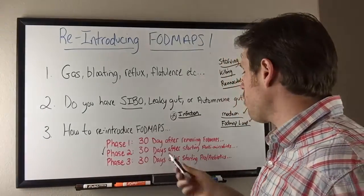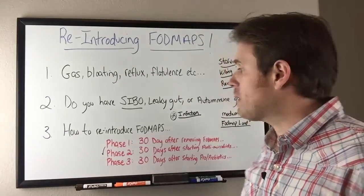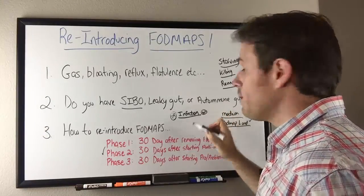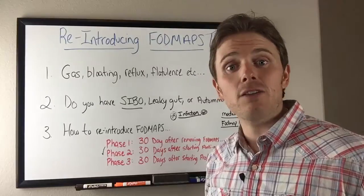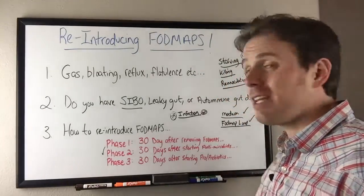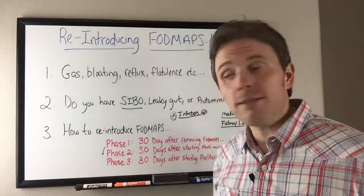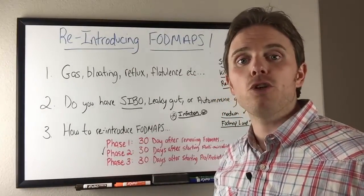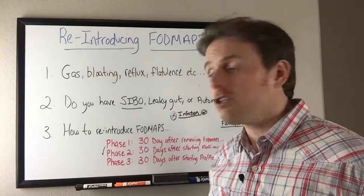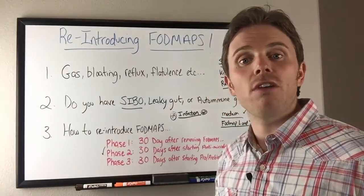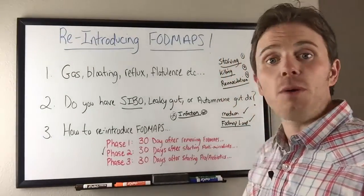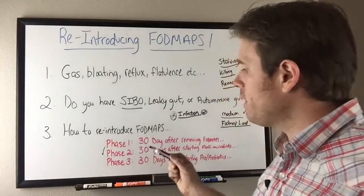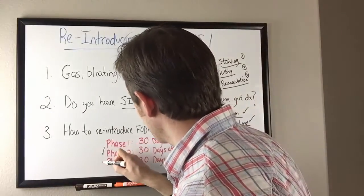Phase two is typically done 30 days after starting an antimicrobial treatment. We're trying to work on a gut infection during that antimicrobial treatment as well. Those treatments can last 60 to 120 days, so we start about halfway through. At that point we've altered the gut microbes significantly, so how we process carbohydrates, sugars, and fats is much different — making it a great time to start reintroducing FODMAPs. Start with the medium ones, work your way up to the higher ones. If we can't add something back in, we add it to the list to try during phase three.